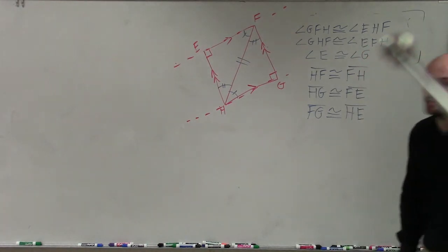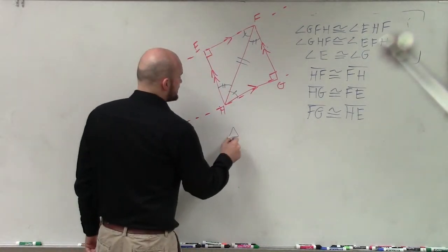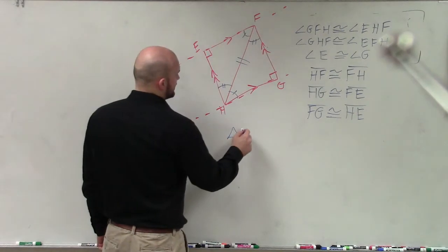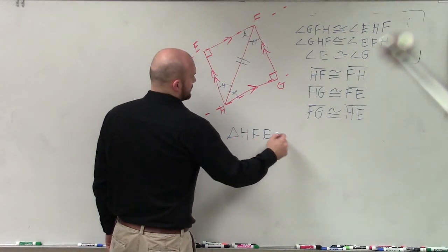OK? So now I've determined all my corresponding parts, all my angles, and all my sides that are corresponding. So now I can say these corresponding triangles. And I'll just say triangle HFE is congruent.